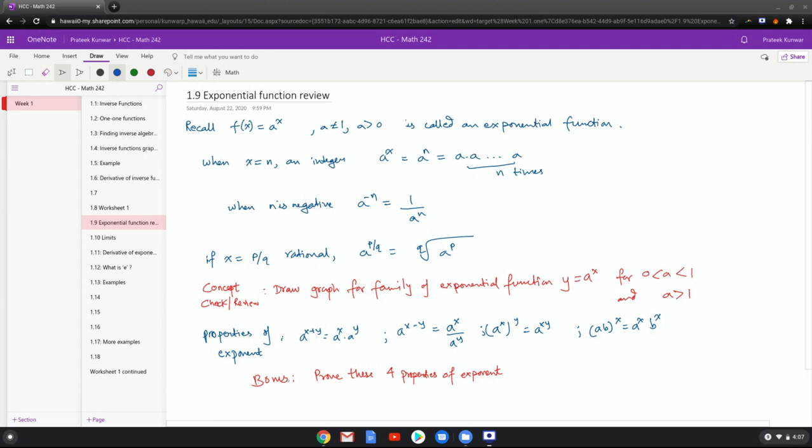Bonus question number two is to prove these four properties of exponent. This is not a formal bonus question because it can be slightly difficult for all values of x. But let's add a restriction for integer exponents. So it should be fairly easy to do for integer exponents. It's limited to that. So now it's a formal bonus question.